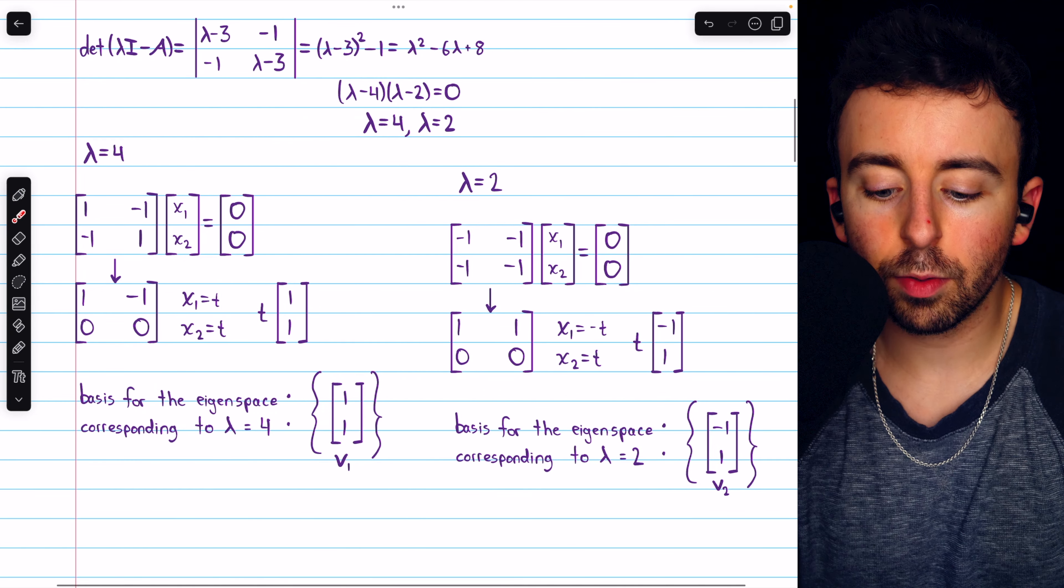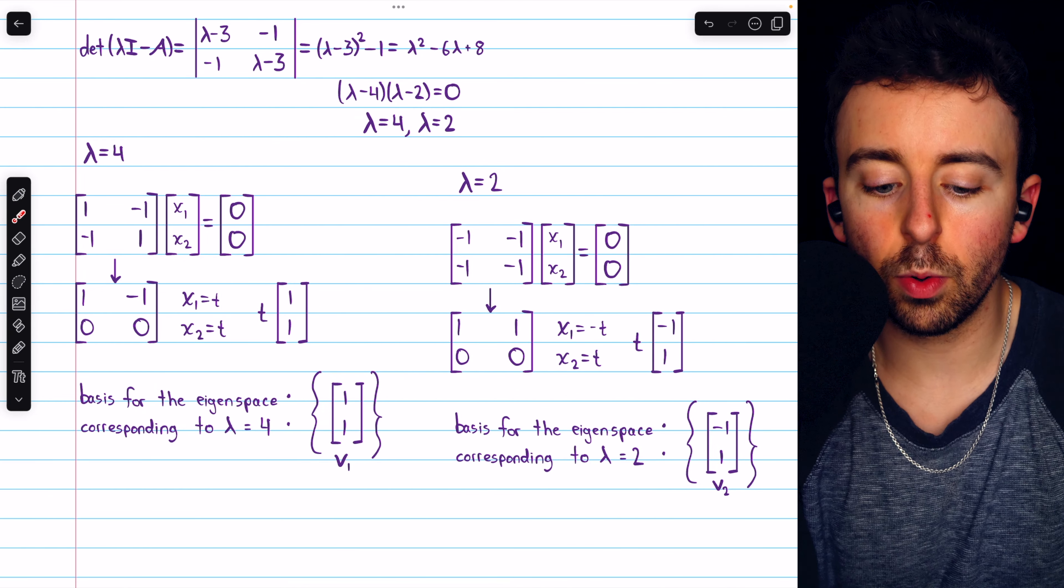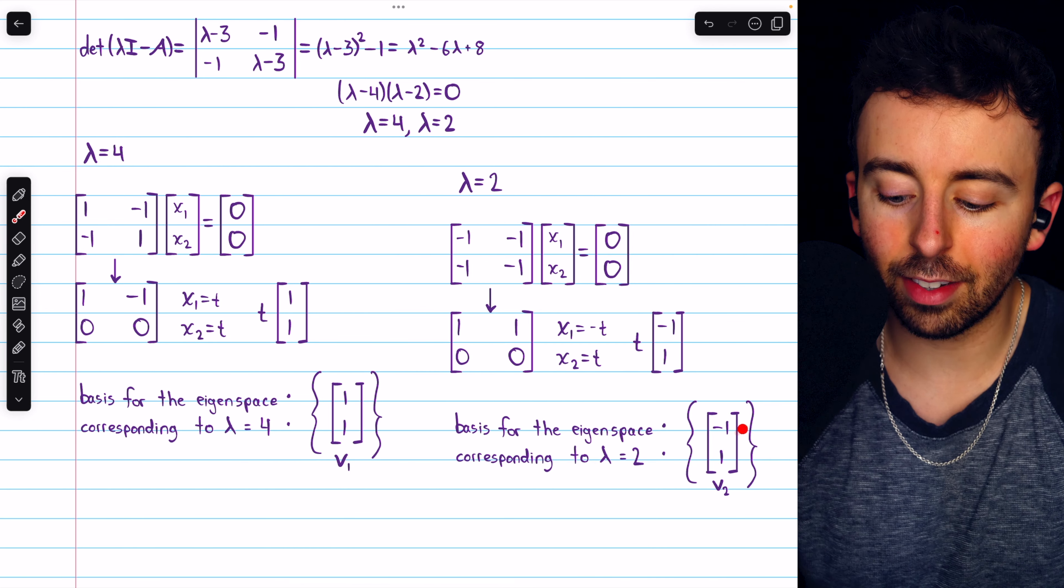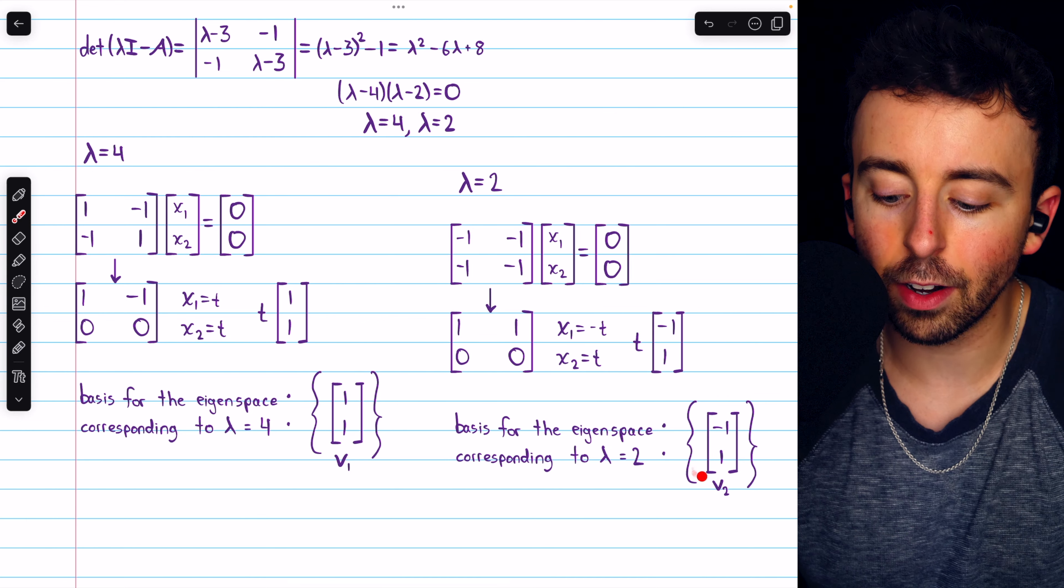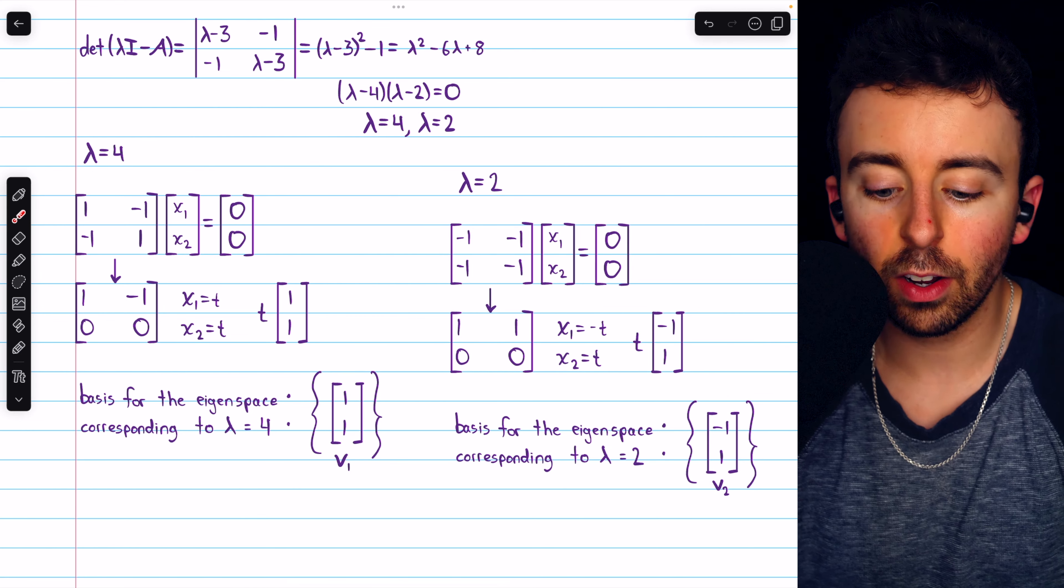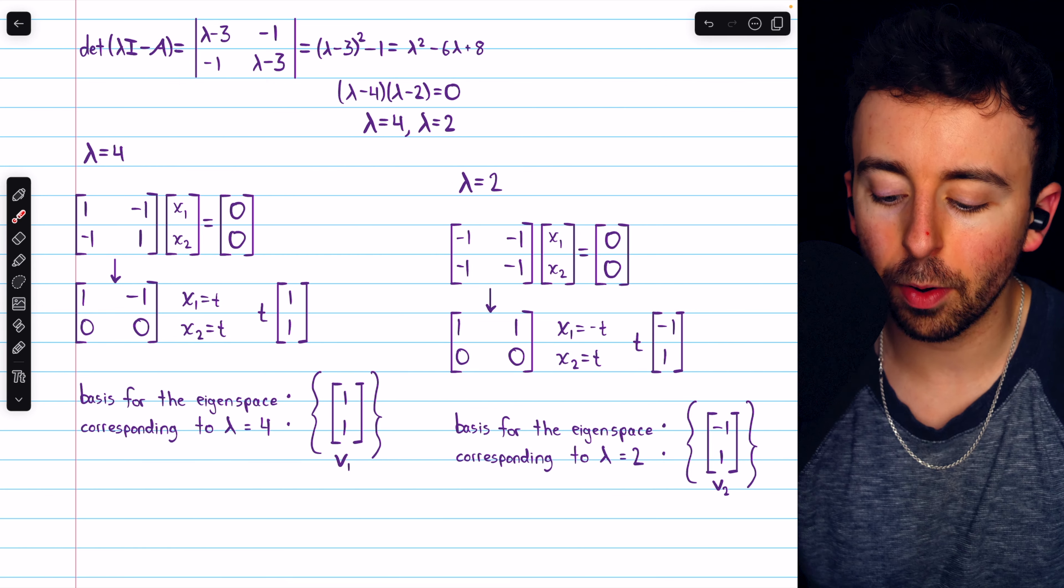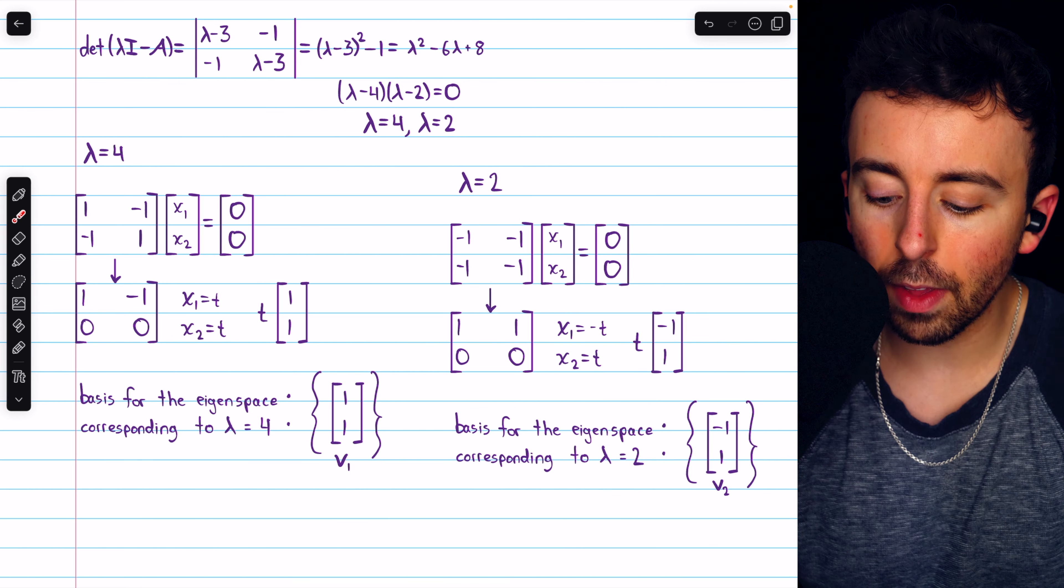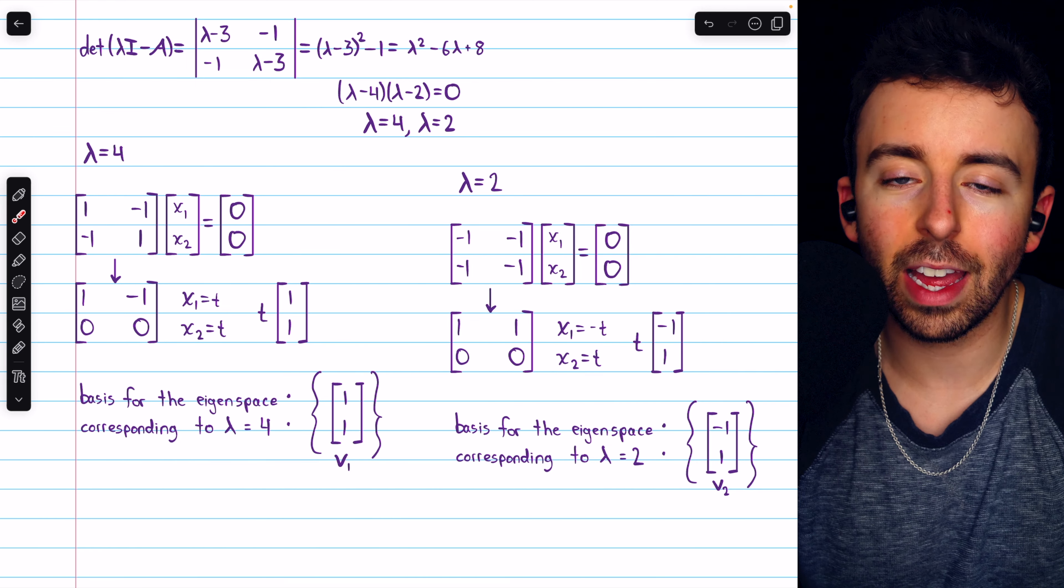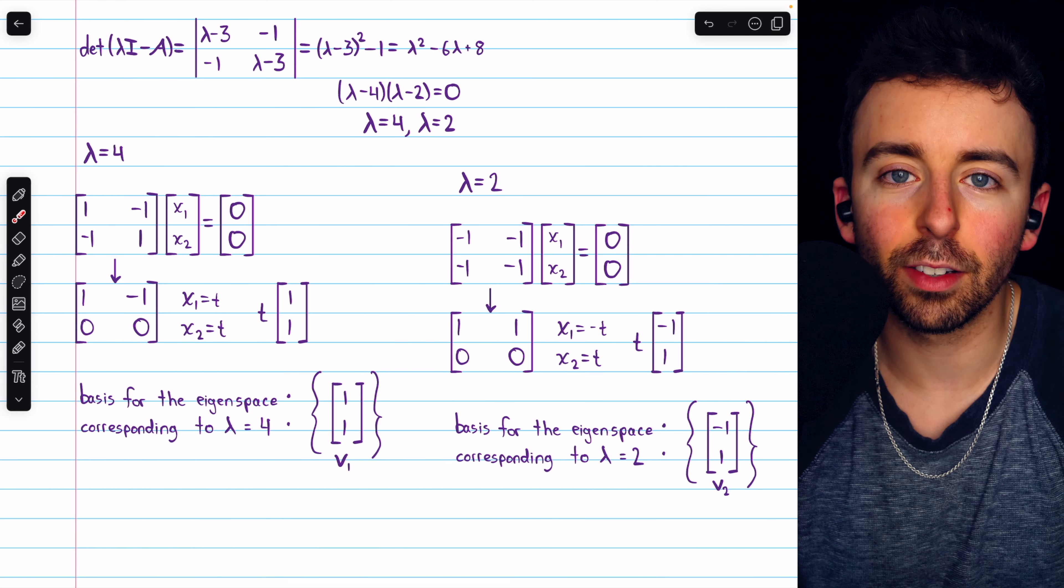We go through the same process for lambda equals 2. Plug 2 in for lambda in this matrix, and then find the null space. We find that this is the basis vector for that null space, which of course is the basis for the eigenspace corresponding to this eigenvalue, the vector [-1, 1]. And we're going to call that v2. If you need more of a recap about eigenspaces and finding their bases, I'll leave a link in the description.